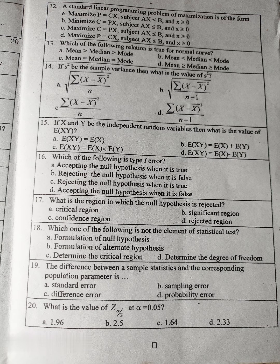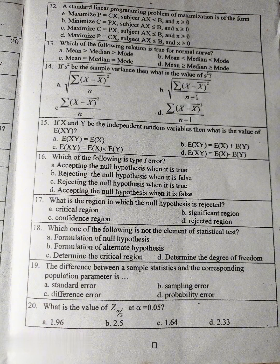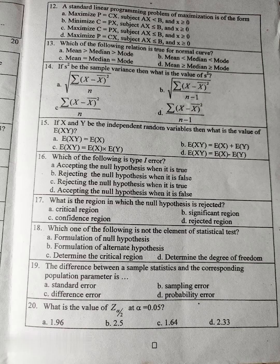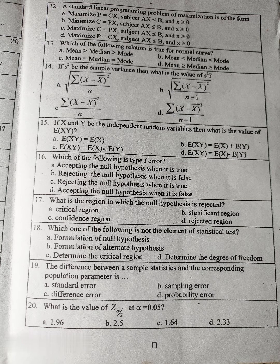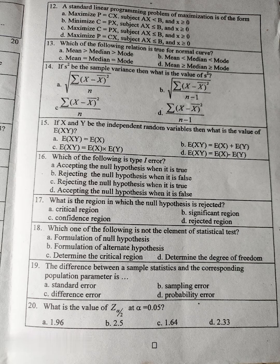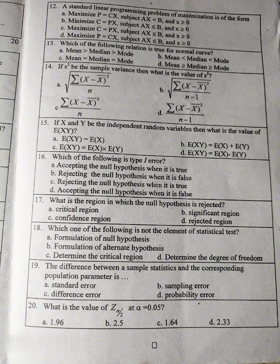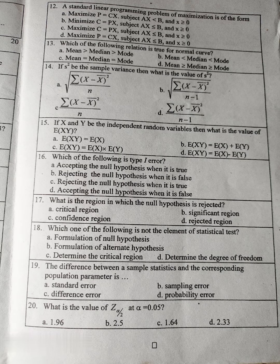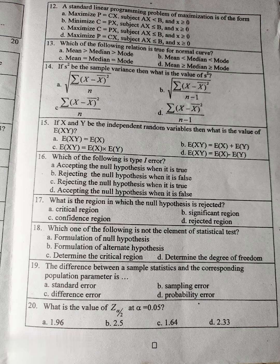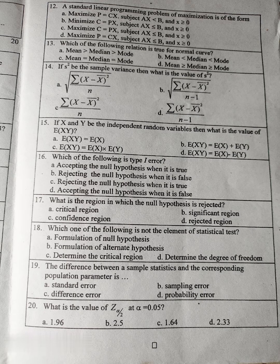B. Mean less than median less than mode, C. Mean equal to median equal to mode, D. Mean greater than median greater than mode. Question number 14: If S square be the sample variance, then what is the value of S square? A. root over summation X minus X bar whole square upon n, B. root over summation X minus X bar whole square upon n-1, C. summation X minus X bar whole square upon n, D. summation X minus X bar whole square upon n-1.